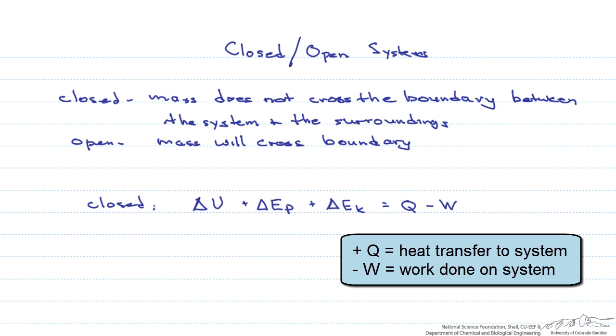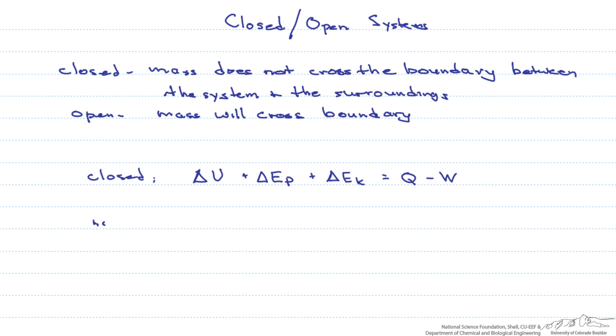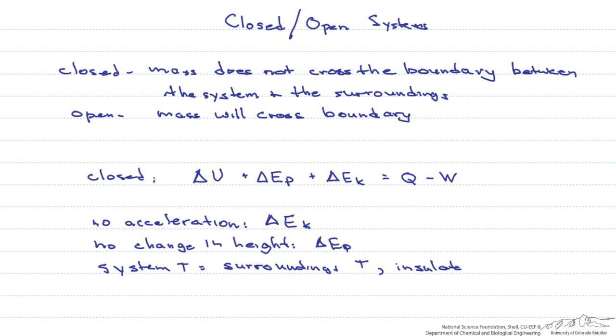The first thing we do with this equation is to simplify it. If there is no acceleration of the system, then we can say that there is no change in kinetic energy. If there is no change in height of the system, then we can say that the change in potential energy is zero. If the temperature of the system equals the temperature of the surroundings, or the system is perfectly insulated, then Q equals zero.